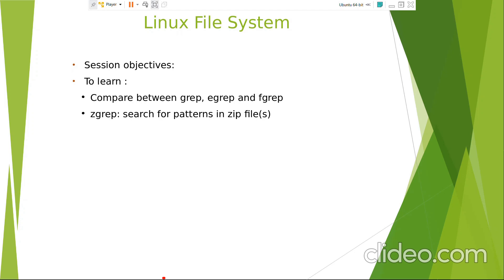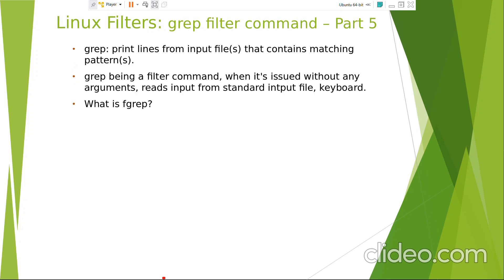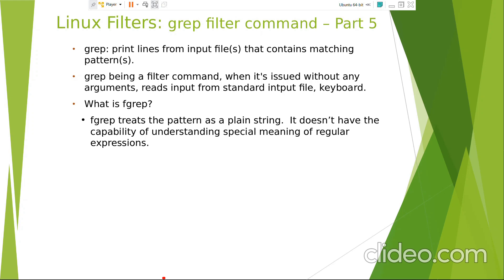We are also going to learn about the zgrep command, which is used to search for patterns in zip files. What is fgrep? fgrep stands for fastest grep. fgrep cannot interpret the special meaning of regular expressions - it treats the pattern as a plain string. Whatever pattern you specify to fgrep, it treats that as a plain string, and even if your pattern contains regular expression characters, they would be treated as ordinary characters.